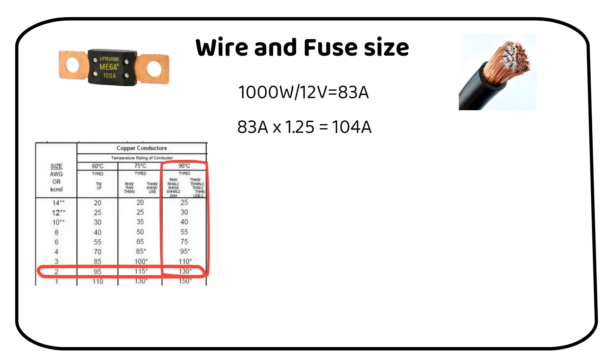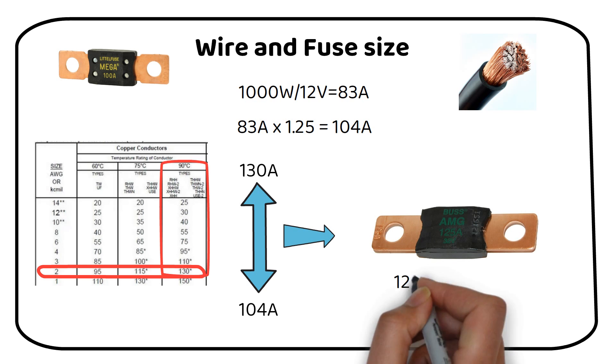For fuse selection, we aim for a capacity between the system's current requirement of 104 amps and the wire's maximum capacity of 130 amps. A 125 amp mega fuse is ideal for our setup.